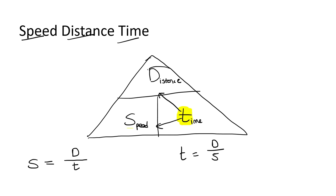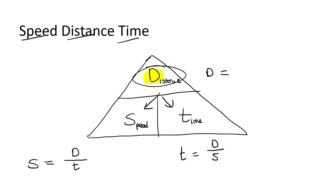And then lastly, if you want to find distance, this one's a bit different because distance is at the top. These two — speed and time — are both at the bottom, so what you do is multiply those two together. Those are the three formulas you need to know. I would advise you to make this triangle for yourself, spend about five minutes, see if you can remember how to use it, and then these questions are going to become really easy.